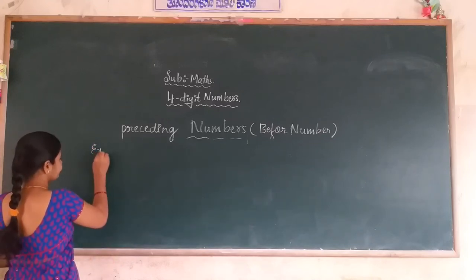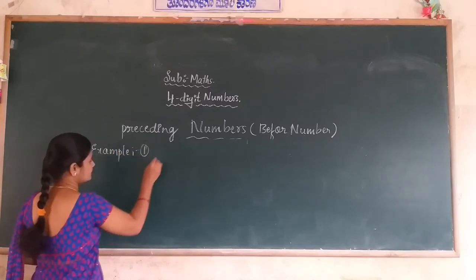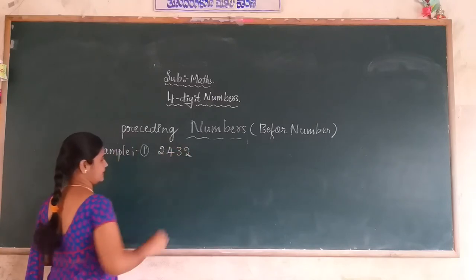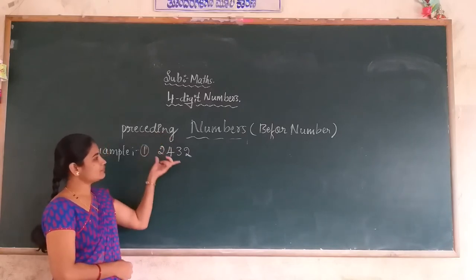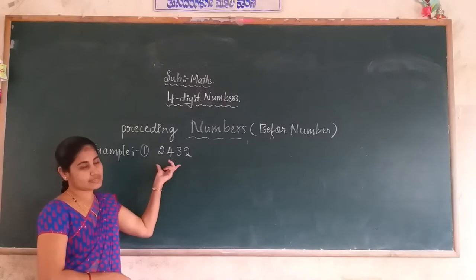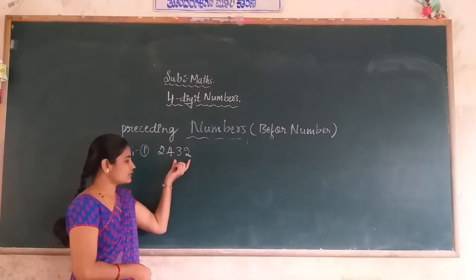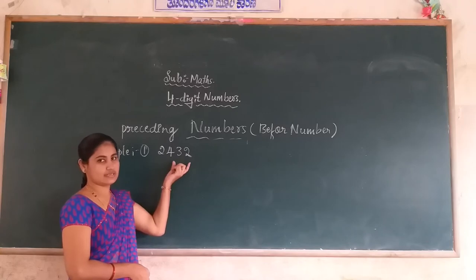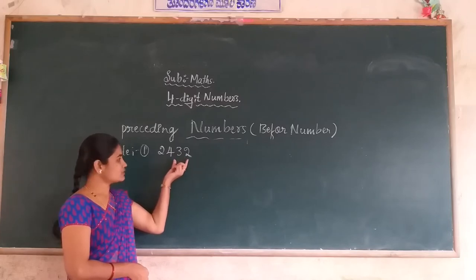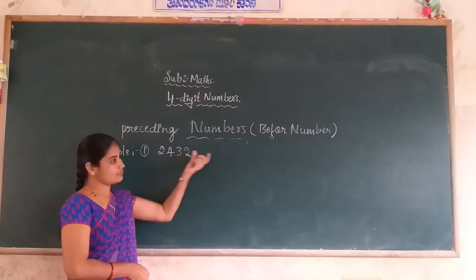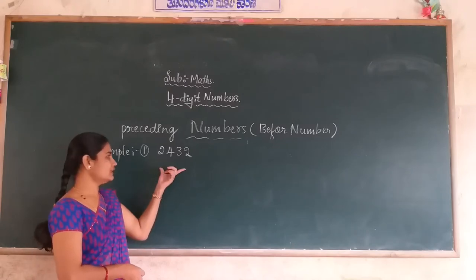Example 1: 2432 is given. One of the four-digit numbers is 2432. Find the preceding number of this number. Dear student, first observe the last two digits of the four-digit number. 32 is there — 3 is in the tens place and 2 is in the ones place. Therefore the last two digits are 32. What is the before number of 32? It is 31.